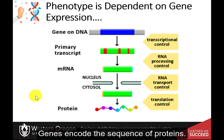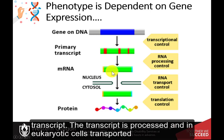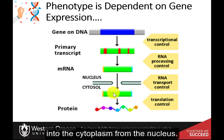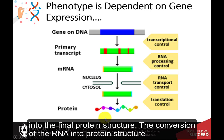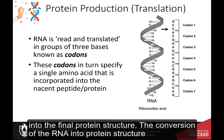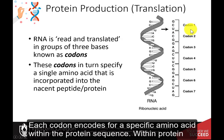Genes encode the sequence of proteins. To express a gene, the gene must first be transcribed into messenger RNA, a primary transcript. The transcript is processed and, in eukaryotic cells, transported into the cytoplasm from the nucleus, where it can be translated by a ribosome into the final protein structure. The conversion of RNA to protein structure is read in units of three nucleotides called a codon. Each codon encodes for a specific amino acid within the protein sequence.